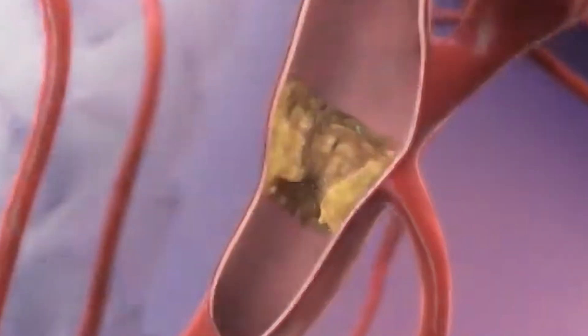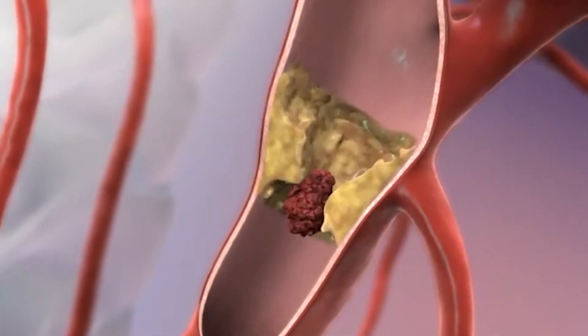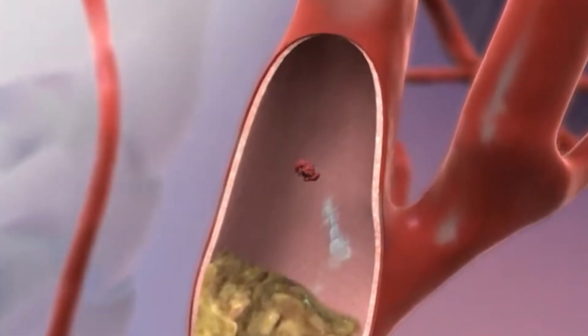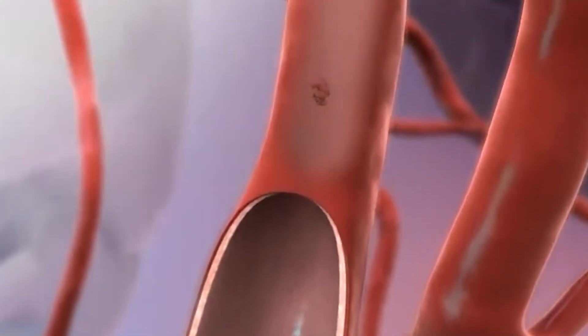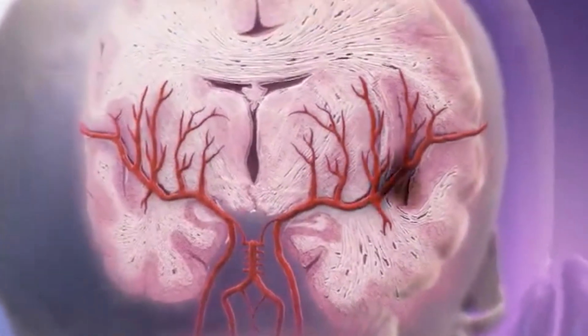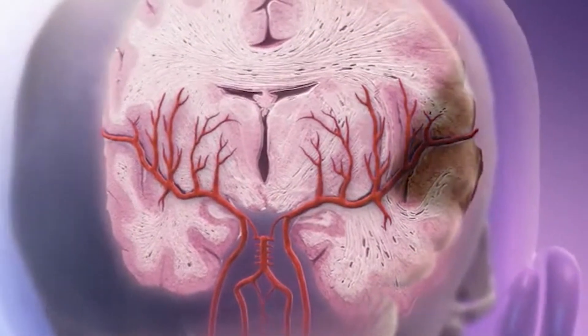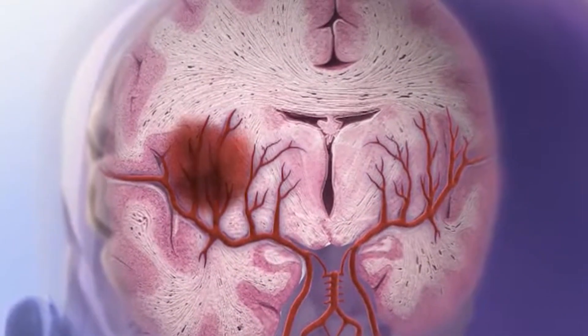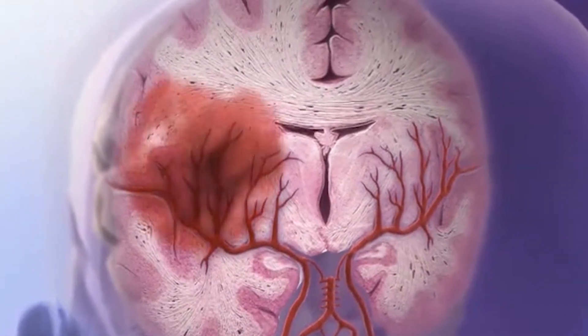What is brain stroke? When the blood supply is blocked in the brain, it can happen in two ways. Either there is a clot in the blood vessels of the brain, or the blood vessels of the brain are ruptured. In both cases, the blood supply is interrupted — and that is called a brain stroke.